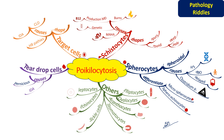Sickle cells are mostly seen in sickle cell anemia. Echinocytes are RBCs with short, regular projections on the surface. Usually this is a storage artifact and also a warning sign that morphologic features in a blood film cannot be completely relied upon.